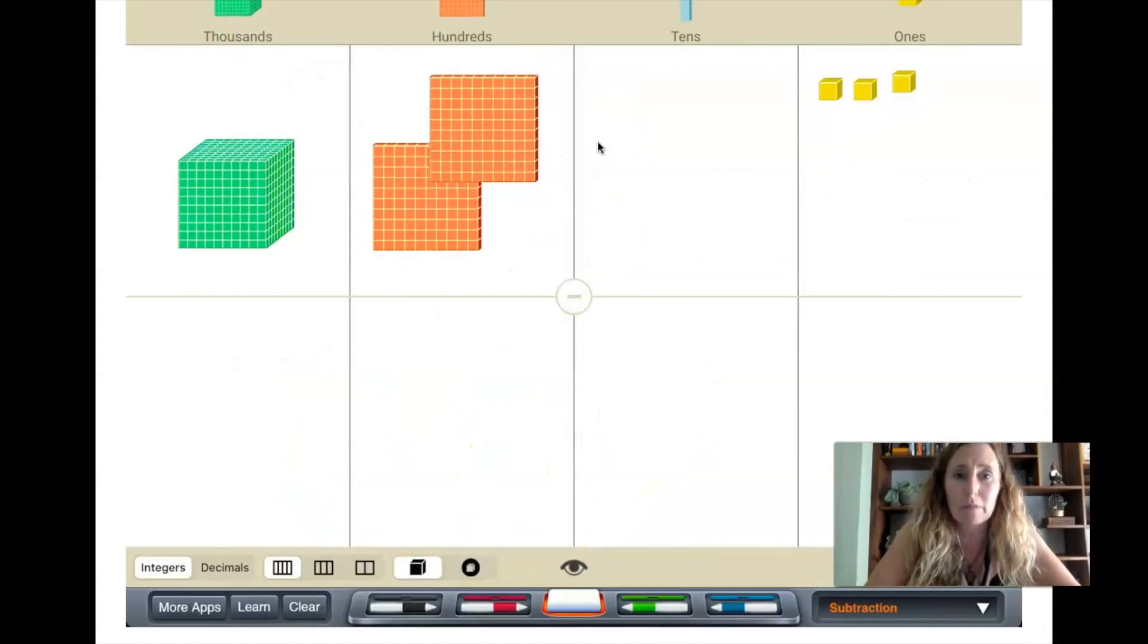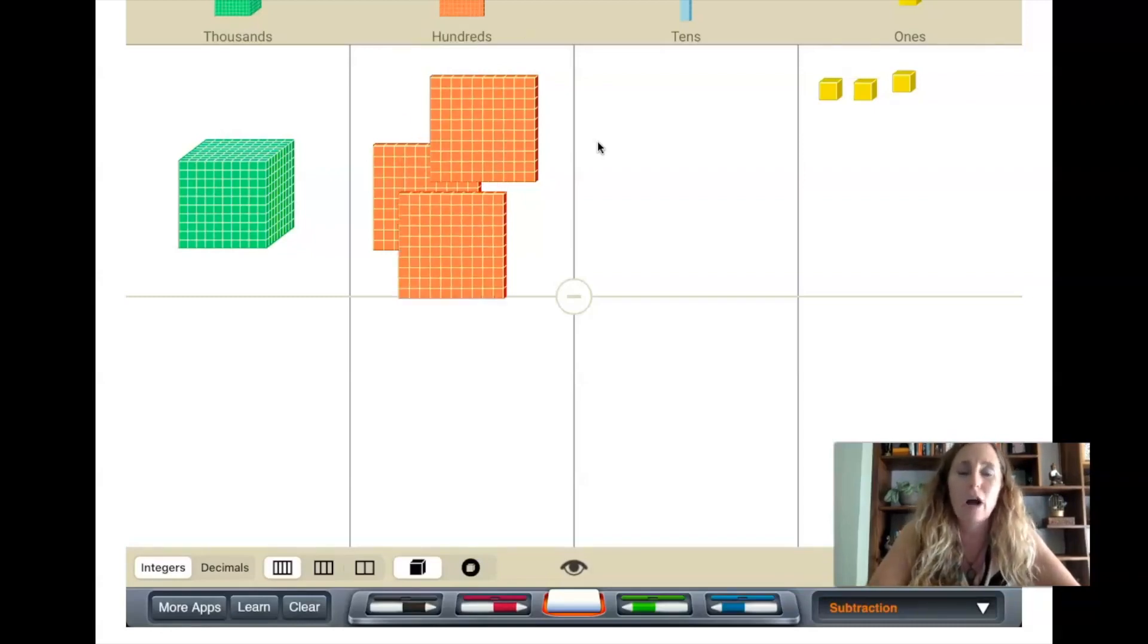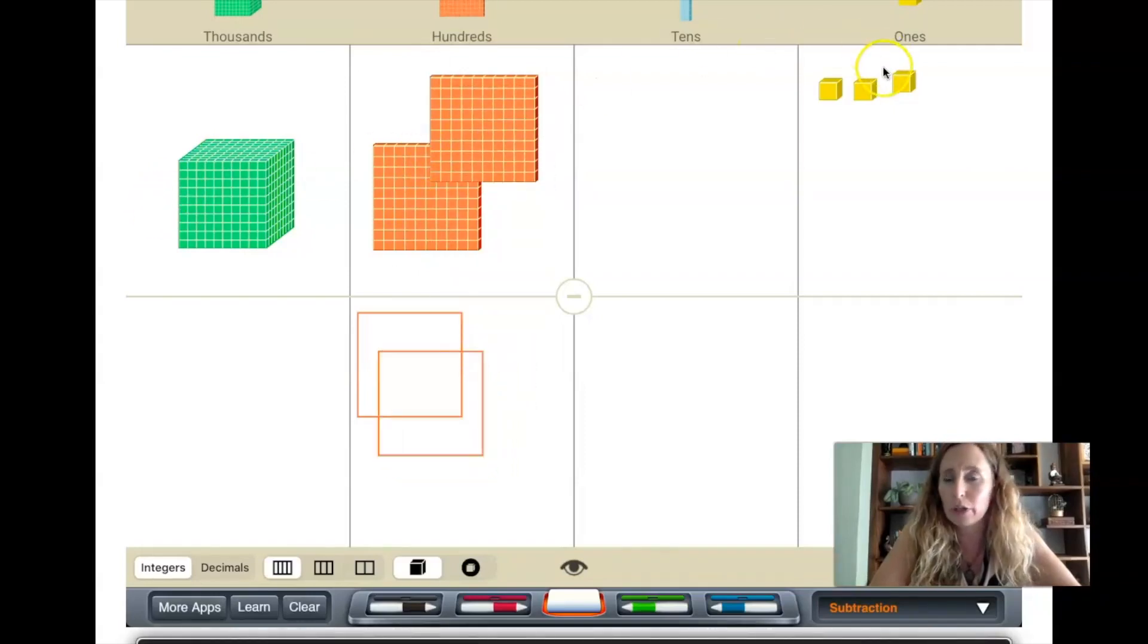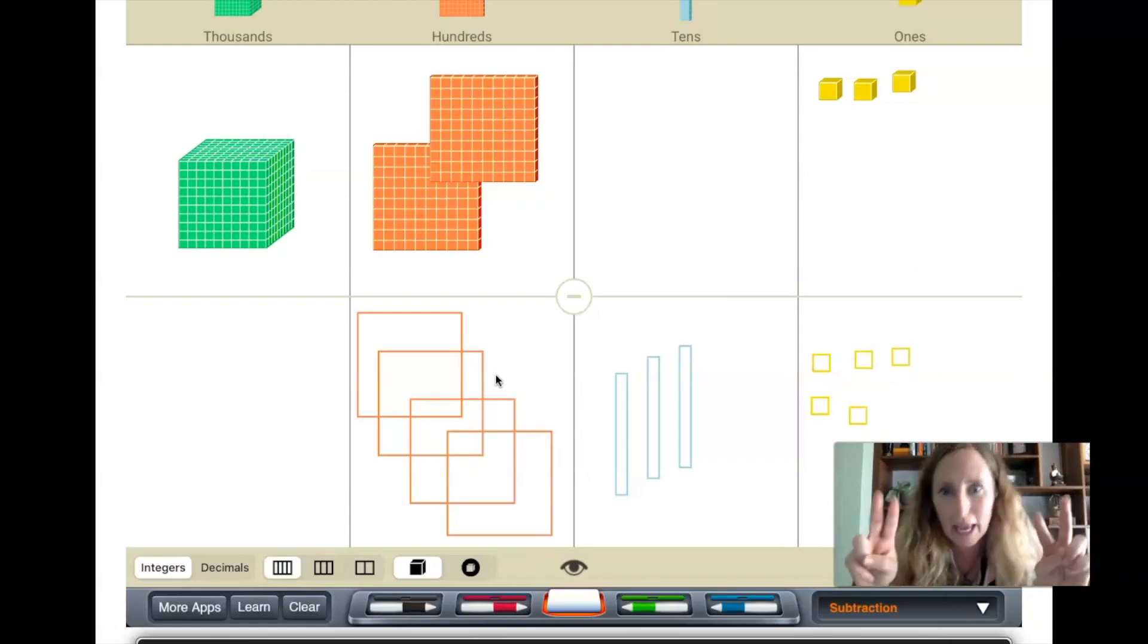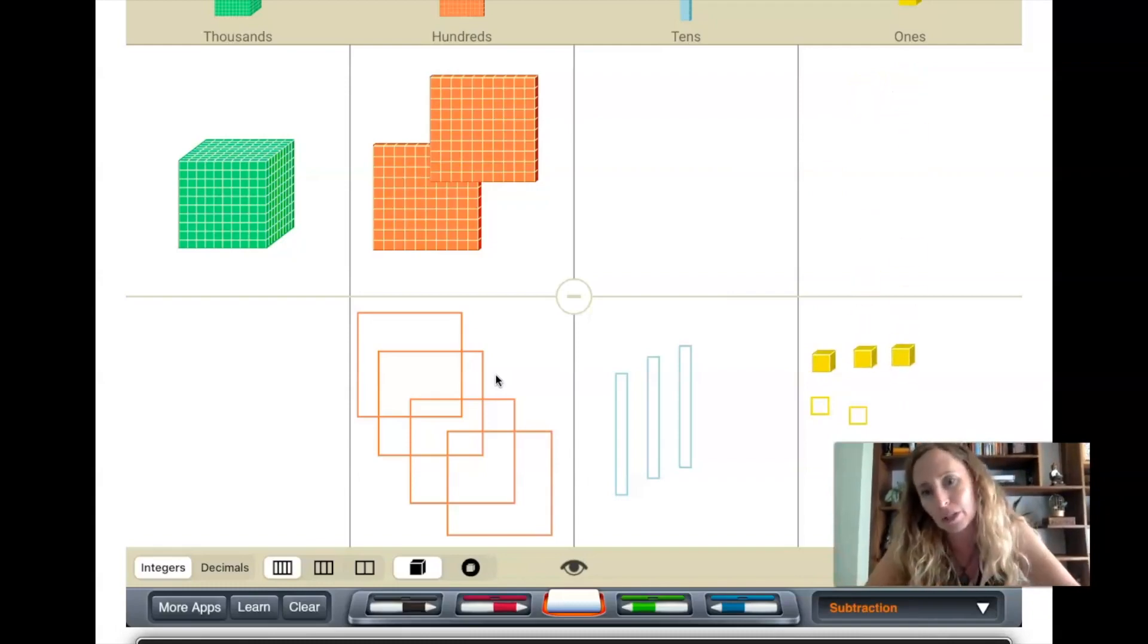Now let's look at this exact same problem, but this time we're going to look at it with the base 10 blocks, and that might help you get a better mental idea of what it is we're doing when we carry. So I've started with 1203, and now I'm going to show that second number that we had in our number sentence—435. Okay, now I'm pulling my five ones down, and as I'm doing that, I'm noticing that I do not have enough ones right now to take five away. I need more ones.